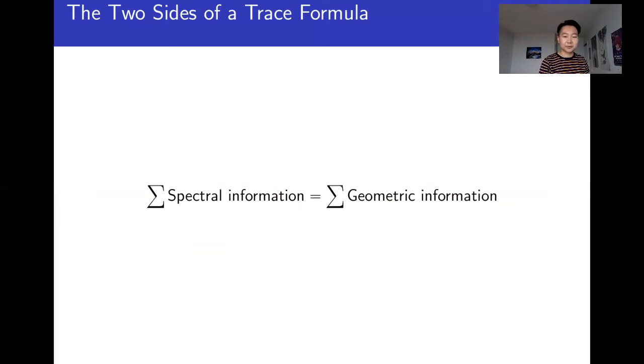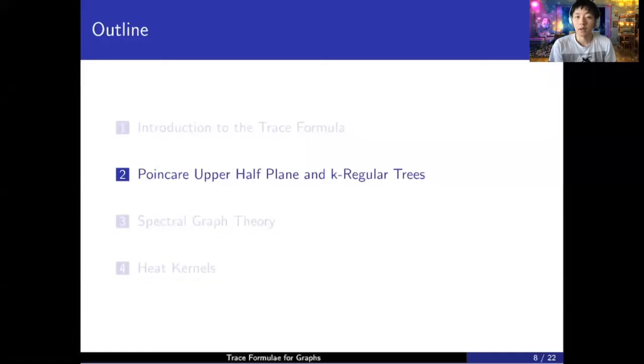So the Selberg trace formula considers the Laplacian operator of the hyperbolic space, discrete or continuous, and it relates it to geometric things such as number of paths of a certain kind, or the length of these paths. So to further expand on these, I will now pass it on to Maggie. Hi, my name is Jiyuan Lu. C has just talked about an introduction to the trace formula, so I will continue to talk on Poincaré upper half plane and the K regular trees, as well as a trace formula called the Selberg trace formula for K regular graphs.